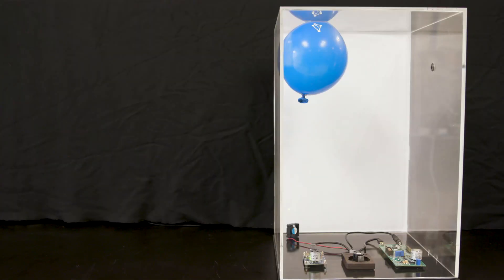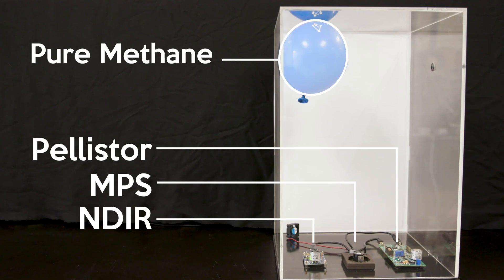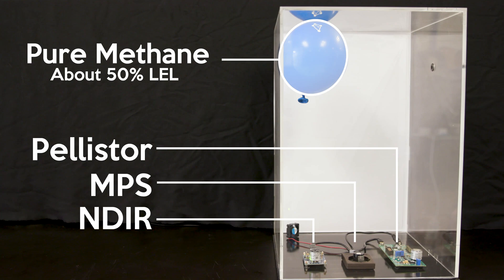Okay, we have a small sample volume inside of this plastic tank here that contains the three different sensors we'll be testing. In the middle is the Nevada Nano NPS sensor, and it's flanked by an NDIR sensor and a pellistor. There's also a small fan in there for rapid circulation of the air, and at the top we've placed the balloon containing pure methane, equivalent to about 50% LEL methane in this particular volume.